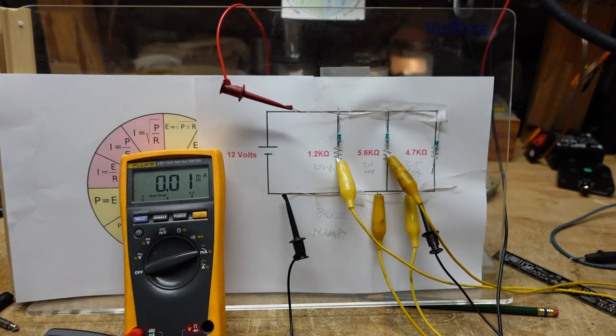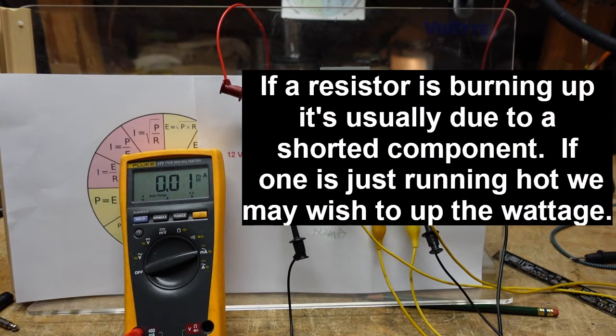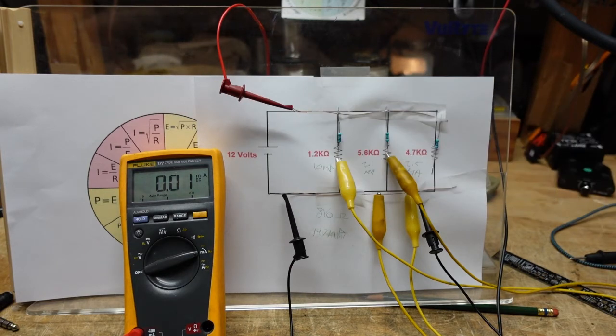These are things you want to have an understanding of. There are times when we're troubleshooting where we need to calculate what our voltage or current might be. As I said before, we may have a resistor that's burning up, we want to know why. So we can calculate how much current is going through and then we can calculate the power. If it's a quarter watt, half watt, one watt resistor we can see if we're above or below that. This is a useful skill to have.